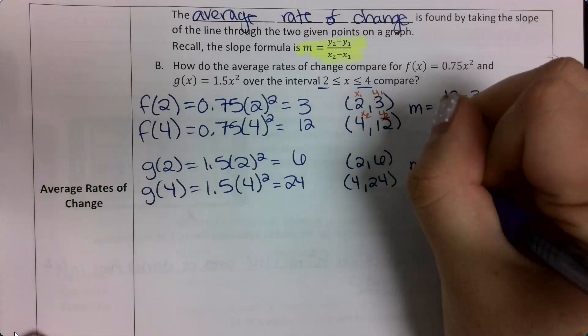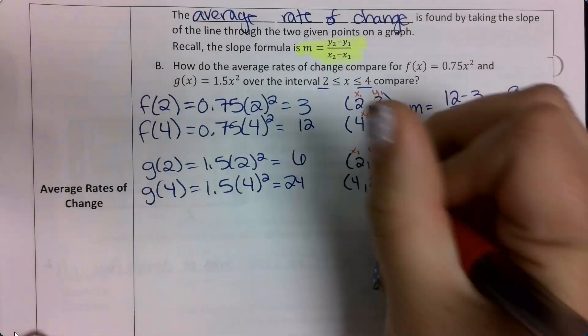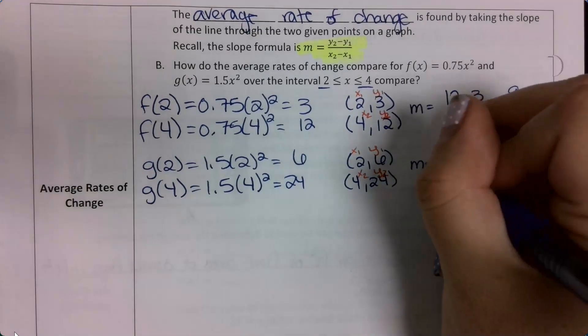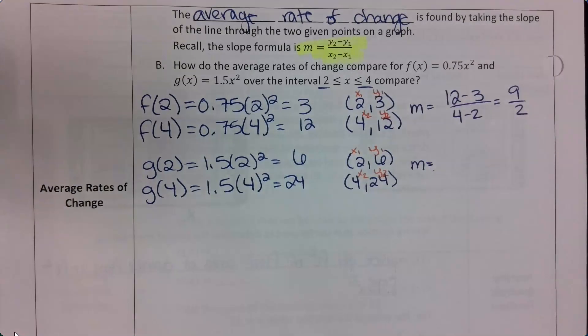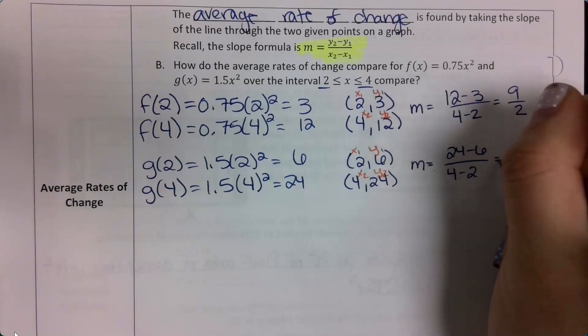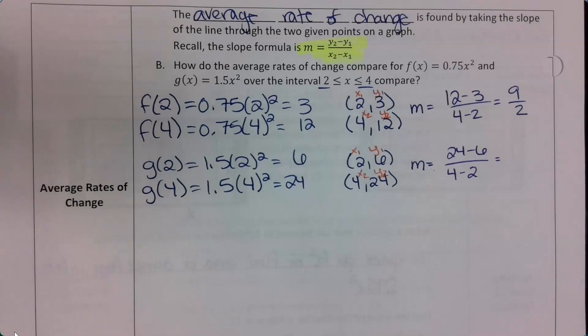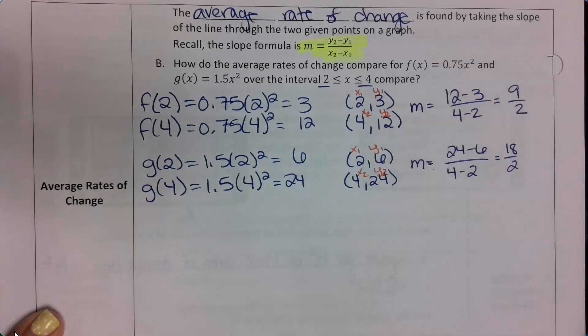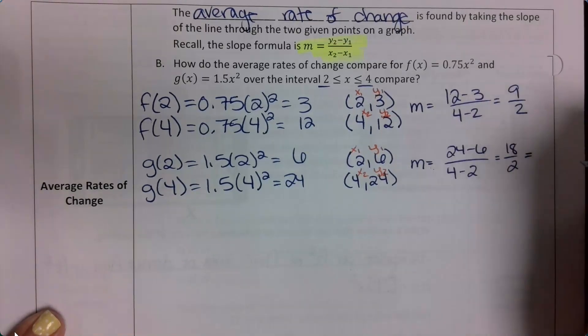And then I want to plug into my slope. Oh, first I want to label x sub 1, y sub 1, x sub 2, y sub 2. Okay, so plugging in, that's going to be 24 minus 6 over 4 minus 2. So what is 24 minus 6? And 4 minus 2. Can I divide 18 by 2? What is it? 9.